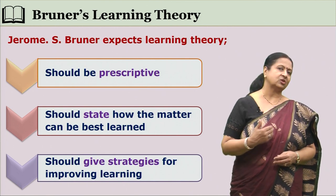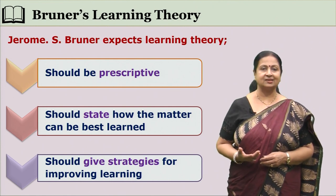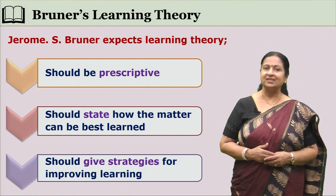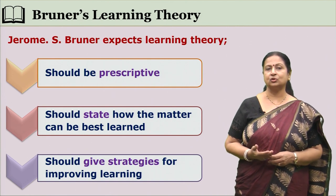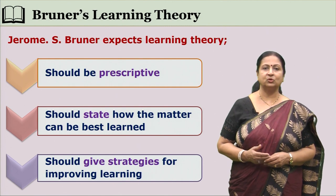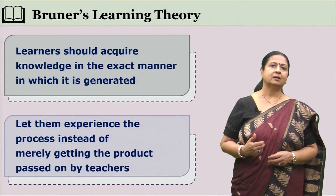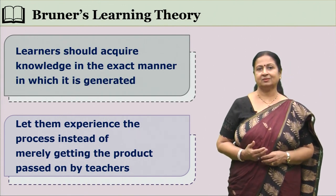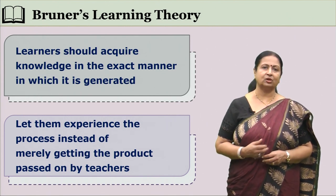Ausubel focused on the teacher's role in learning, whereas Bruner focused on the child's role in attaining certain concepts. Bruner focused on the process of knowledge acquisition rather than on the information or the product of that particular knowledge.